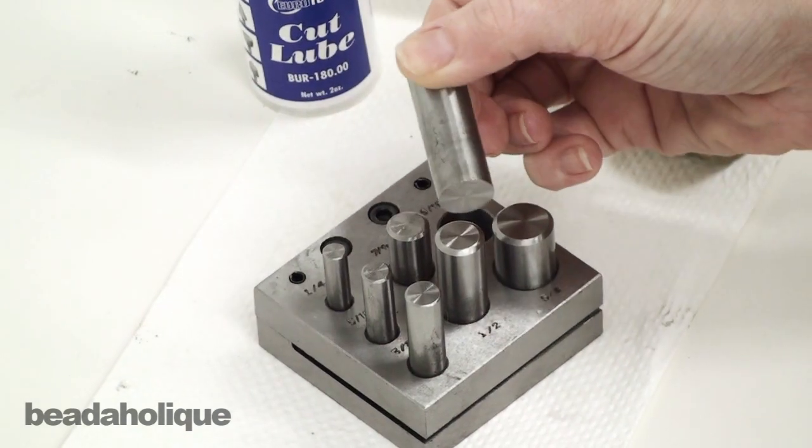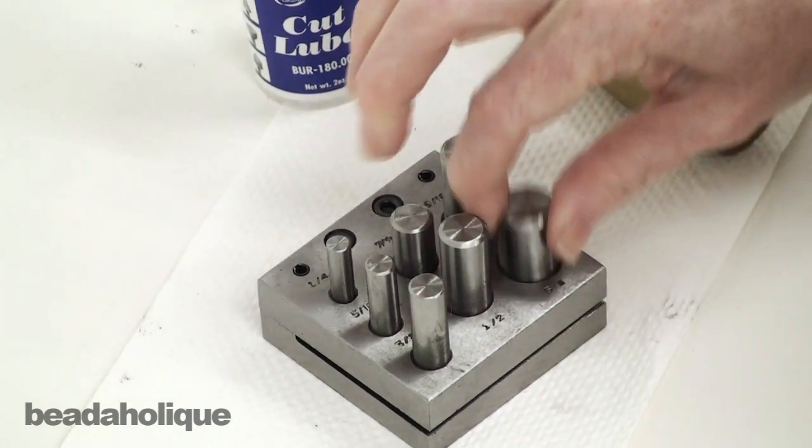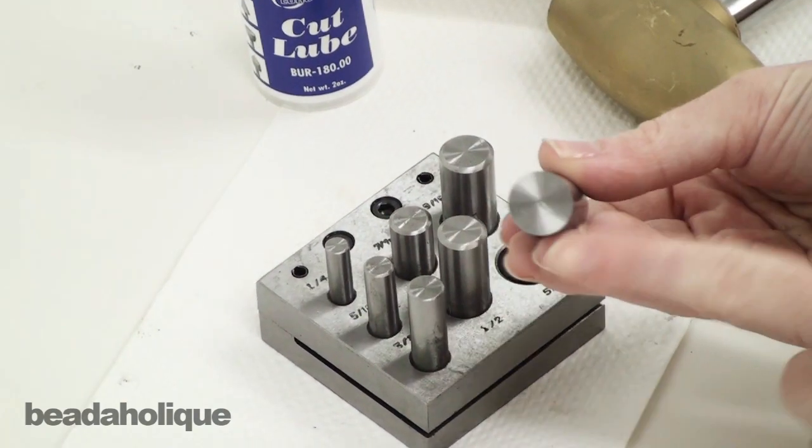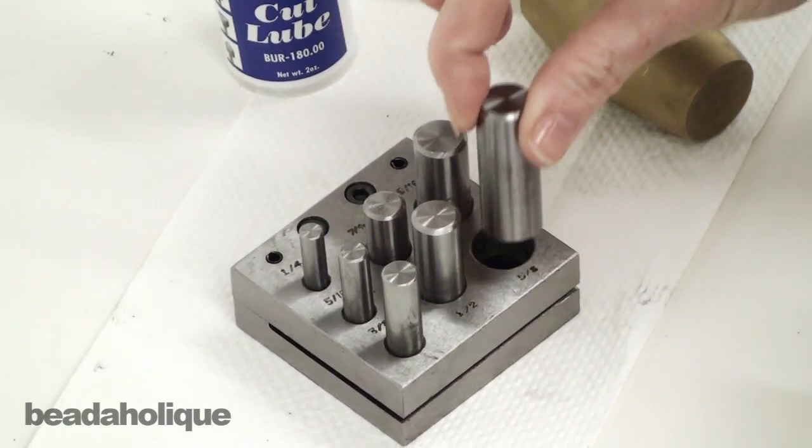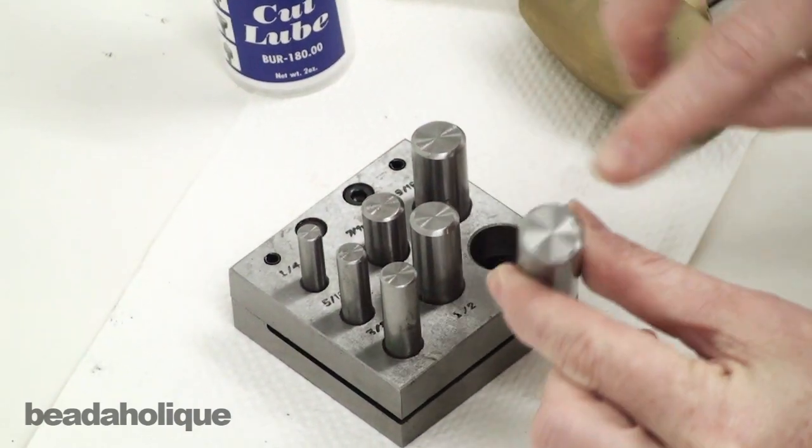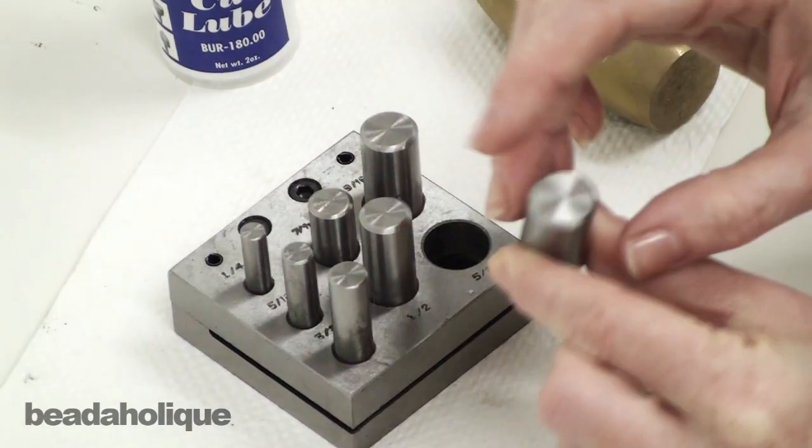These little cutters come right out. You just easily remove them. Now there's a flat side and this is going to be the side that goes down. It's actually going to do the cutting and the one with the beveled edge is going to be the one up top.